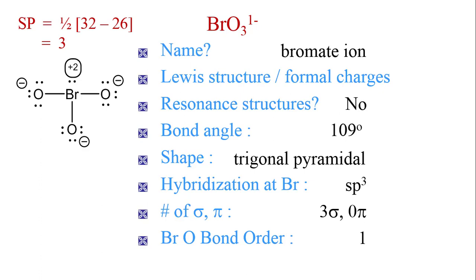When we used the formula for shared pairs, we were imposing the octet rule on our Lewis structure. However, we ended up with formal charges on every atom, including a plus 2 formal charge on bromine.